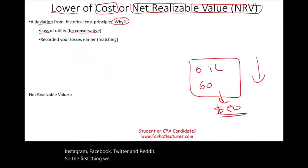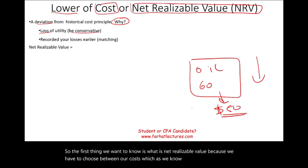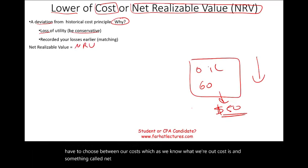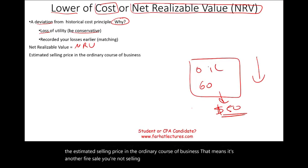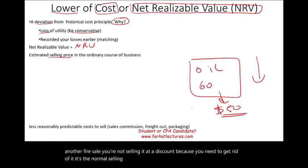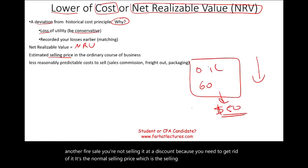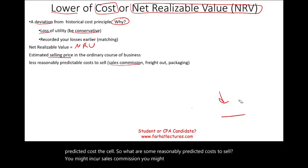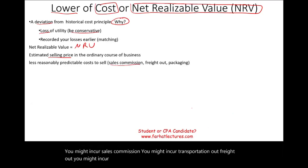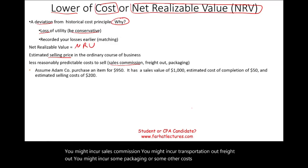The first thing we want to know is what is net realizable value (NRV), because we have to choose between our cost and NRV. NRV is computed by taking the estimated selling price in the ordinary course of business — not a fire sale, but the normal selling price — minus the reasonably predicted cost to sell. Reasonably predicted costs to sell could include sales commission, transportation out, freight out, or packaging costs.